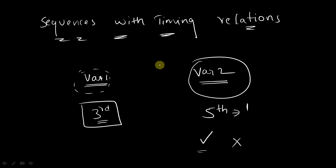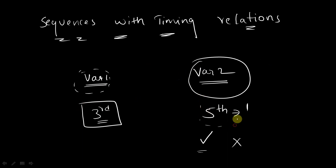Once again, to repeat: if we have two variables, variable one and variable two, and we want to establish a timing relationship — that is, if variable one becomes high at the third clock edge, then variable two should become high at the fifth clock edge. If it is not becoming high, the assertion will get failed; if it is getting high, the assertion will get passed. So to create this particular timing relationship, we will use the hash hash symbol.